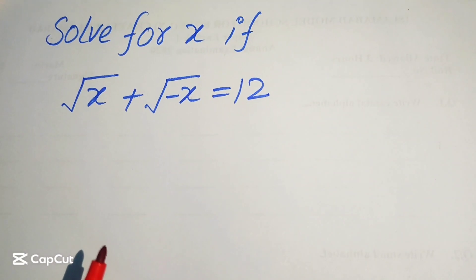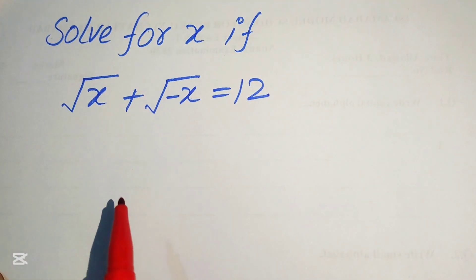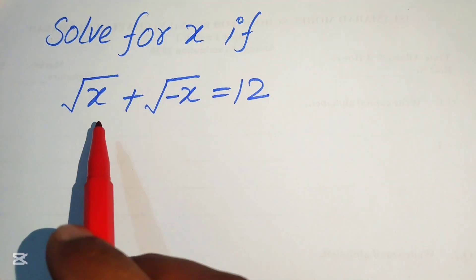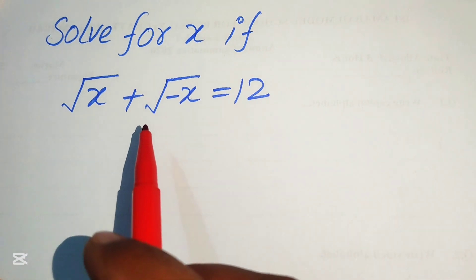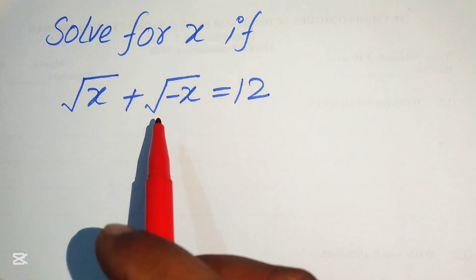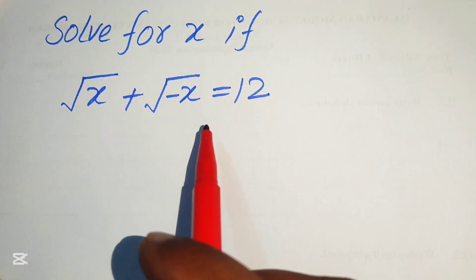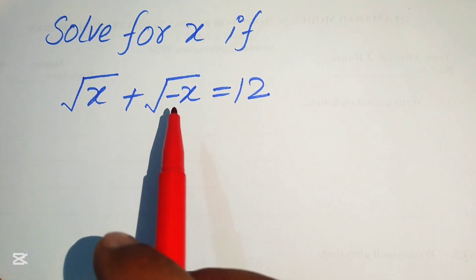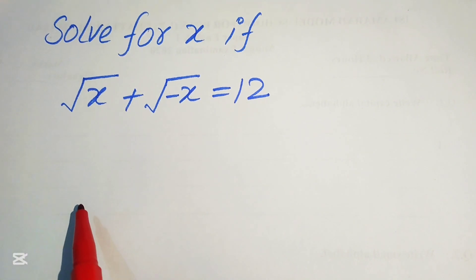Hello everyone, welcome to this math alphabet algebra problem. Here we have the square root of x plus square root of minus x equals 12, and we solve this problem for the values of x.